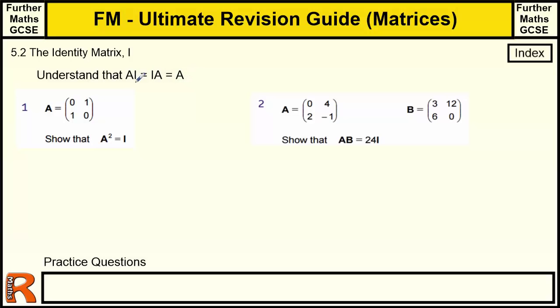So A times I is going to be the same as I times A, and that's just A, because the identity matrix doesn't actually do anything. It just keeps everything the same.